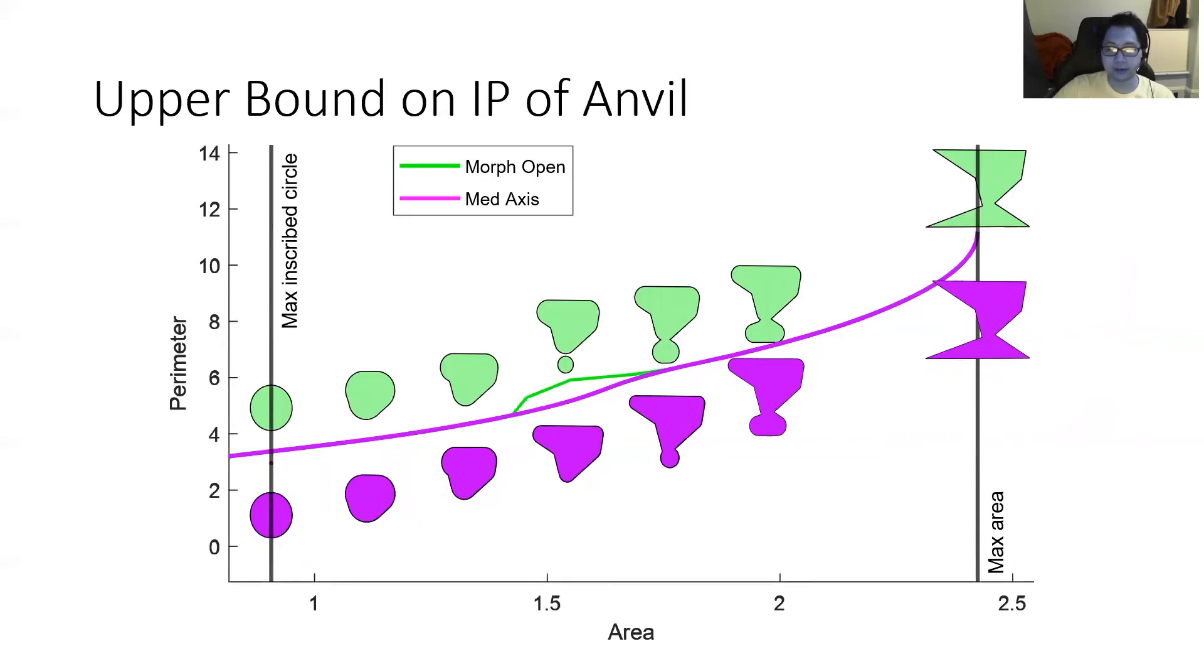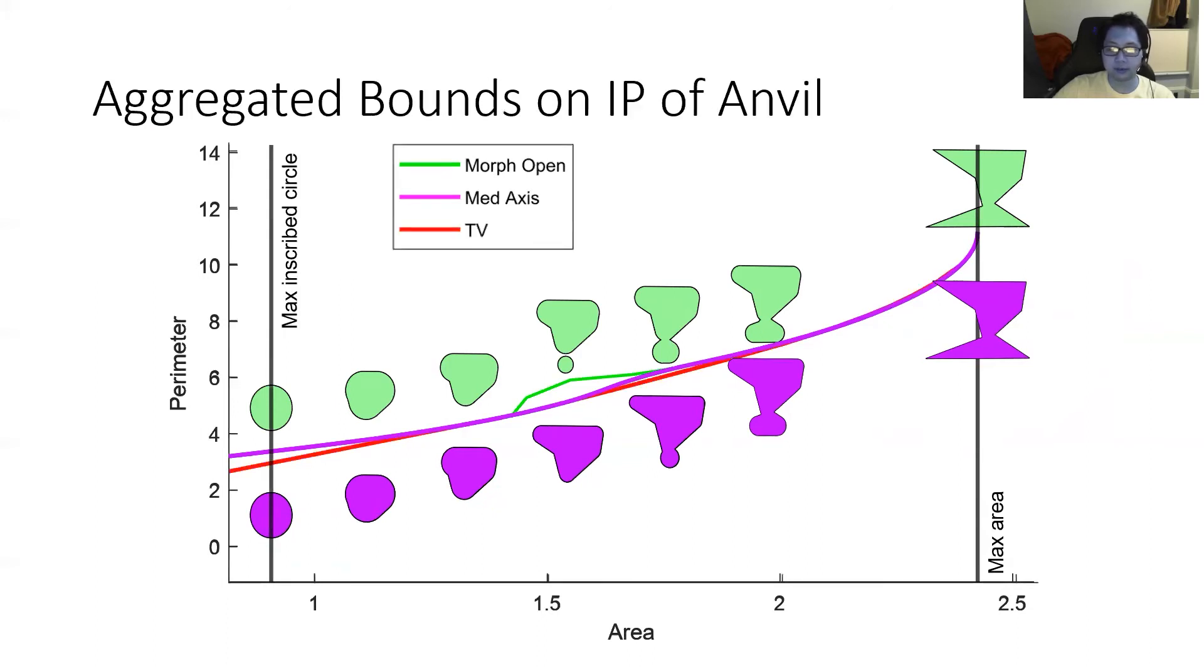Continuing this procedure until the full domain is reconstructed produces our upper bound to the isoperimetric profile. For comparison, we show here the isoperimetric profile upper bound computed by morphological opening alone. Note that it is much looser than our upper bound, particularly when the domain has necks. Finally, we show the convex lower envelope of the profile in red. Combining these upper and lower bounds shows us that the isoperimetric profile is guaranteed to lie within a very narrow range.